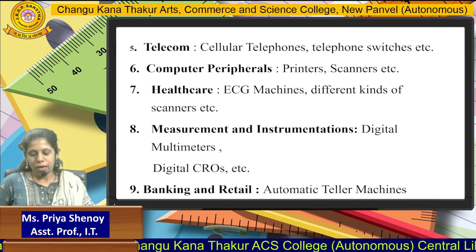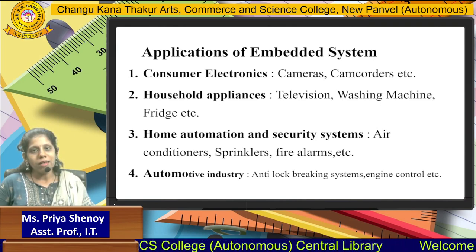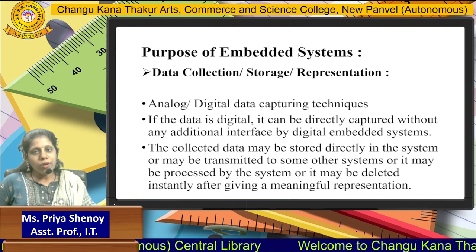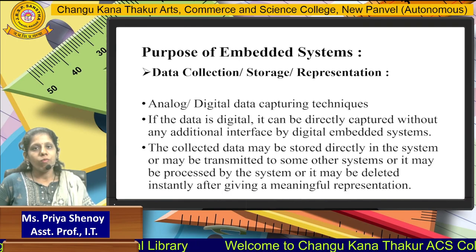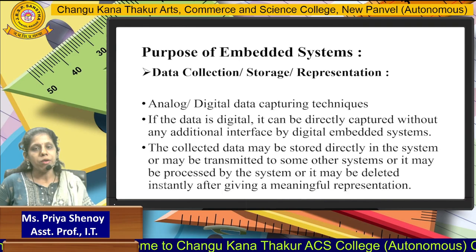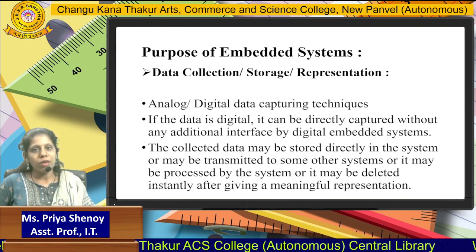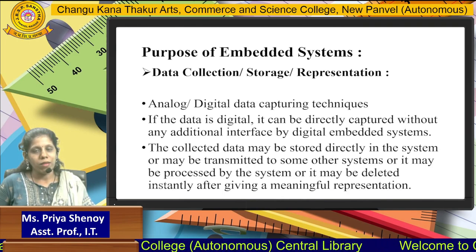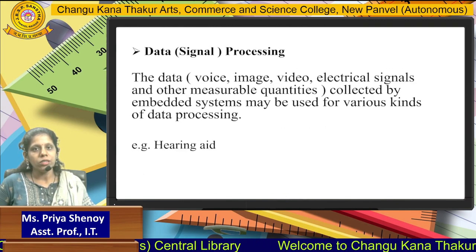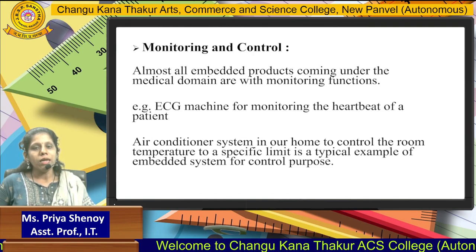So till here, we have discussed the different fields and areas where embedded systems can be used. Our next topic is what are the different purposes for which embedded systems can be used. Embedded systems are used for: data collection, storage and representation; data communication; data signal processing; and monitoring and control.